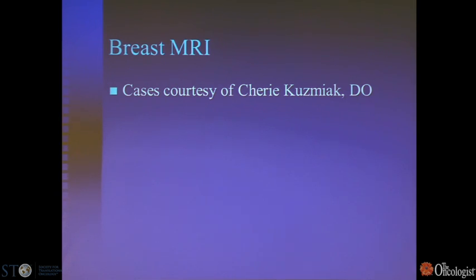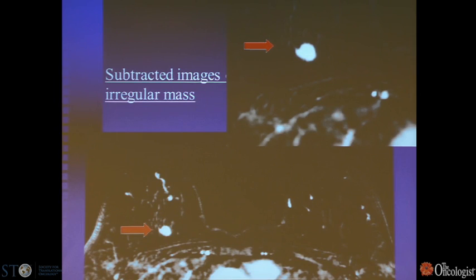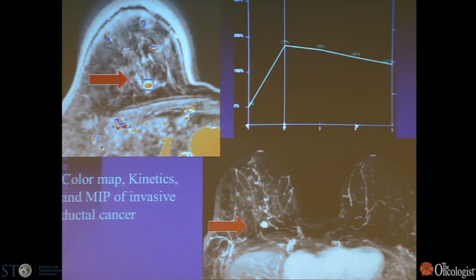Showing a few breast MRI cases courtesy of Dr. Sherry Kuzmiak, director of the breast imaging program. This first case shows oblique and CC views demonstrating dense breast parenchyma, very difficult to detect an underlying tumor. A subtracted image — taken by subtracting pre-contrast data from a post-contrast image — removes the obscuring parenchyma and allows focus on a speculated mass. A newer approach is quantitative evaluation of contrast enhancement using color maps and dynamic curves demonstrating rapid uptake and slow washout, characteristic of breast cancer.